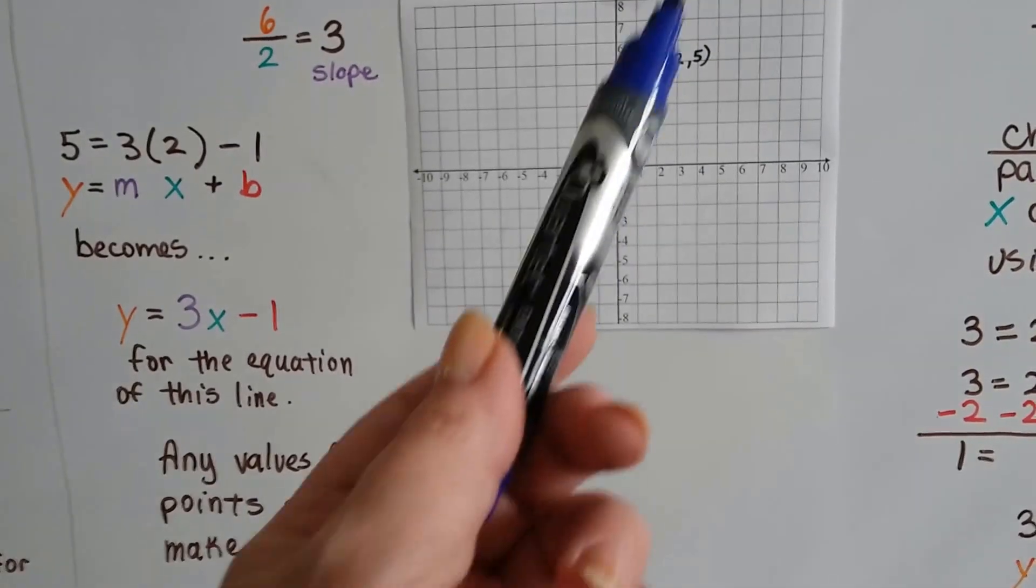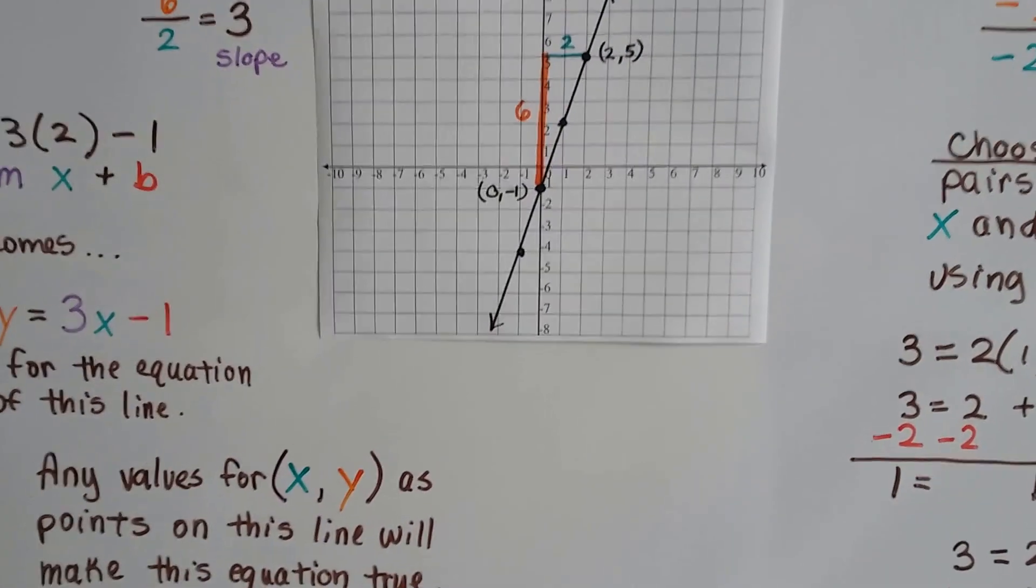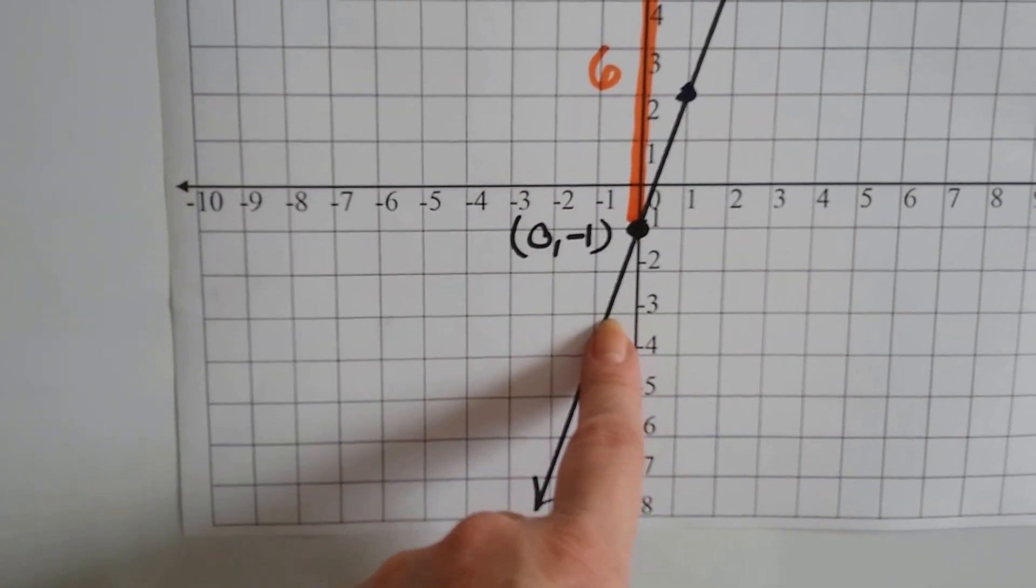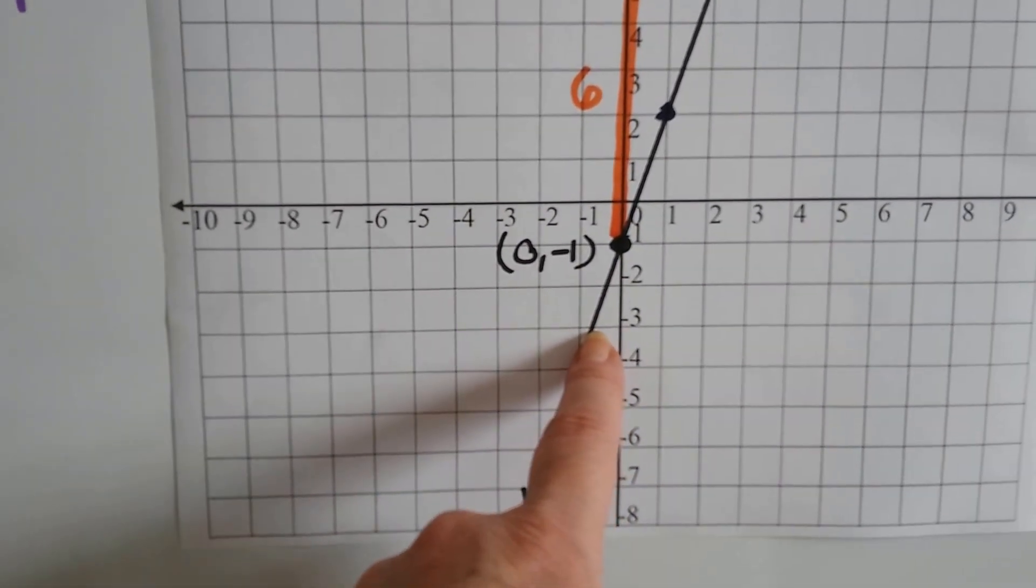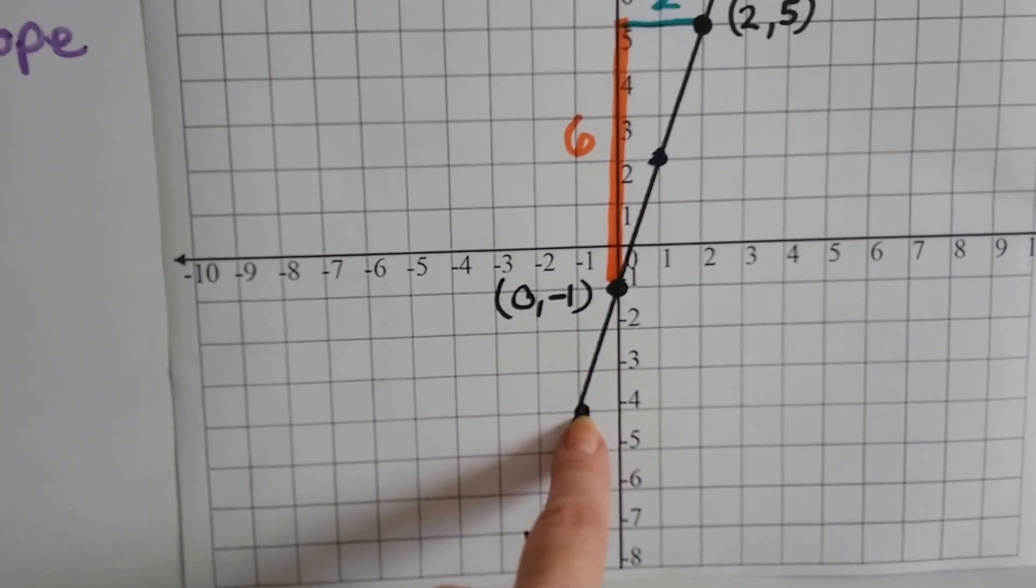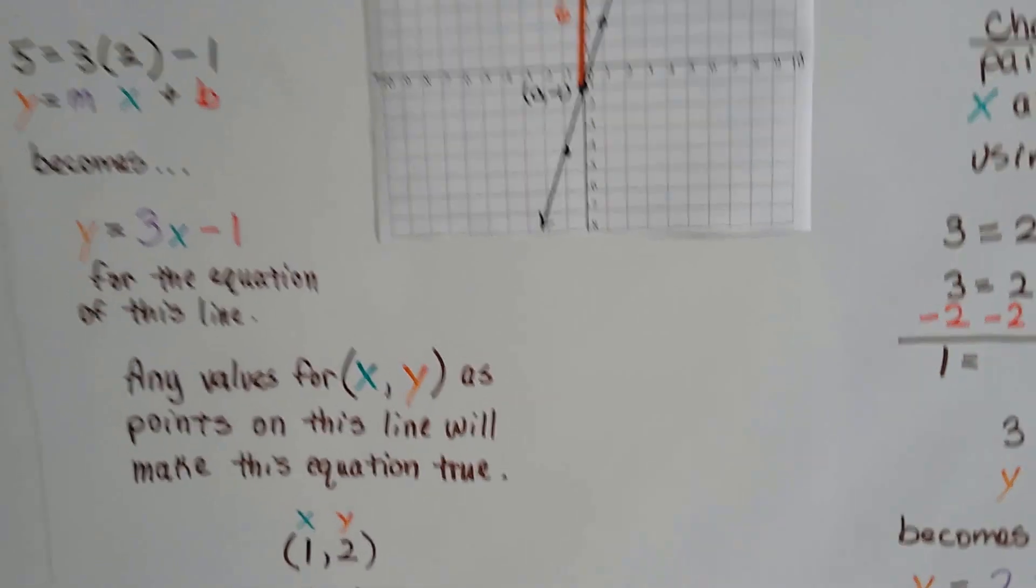So this equation is true for every single point that we can find in this line. Even if they were fraction points or decimals, it would still come out true. It would be harder for us to find it because we don't know if this is 2-thirds or 3-fourths, because it's hard to tell when they're not on the actual grid line.